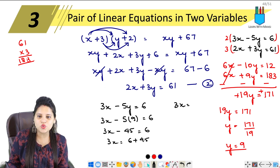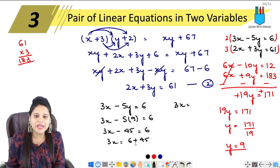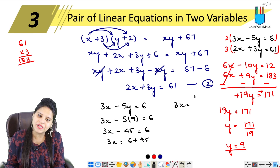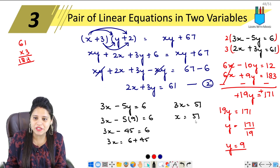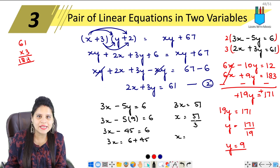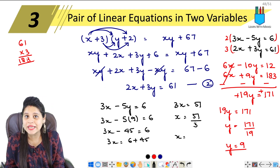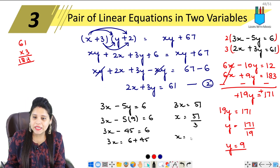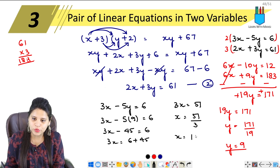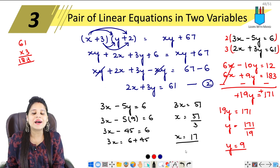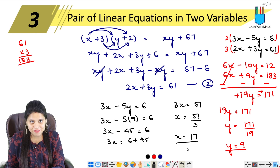So 3x = 6 + 45 = 51. Therefore x = 51 ÷ 3 = 17. So x = 17.